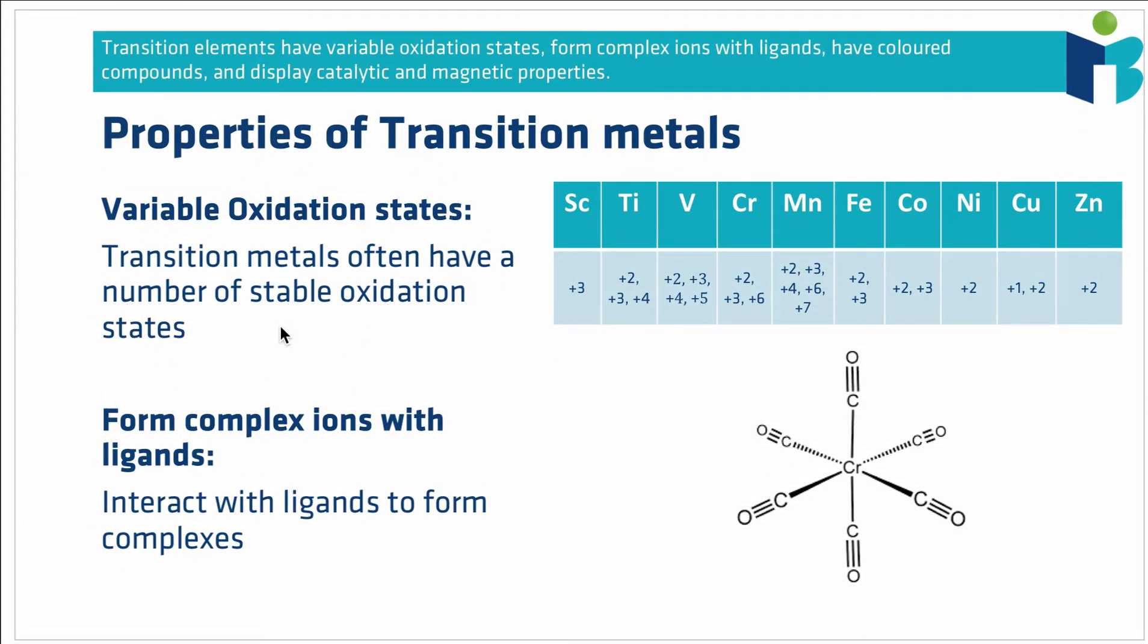The first property to point out is that transition metals often have variable oxidation states. What this means is they can form stable compounds in a number of different oxidation states. This isn't something that can normally be said for group 1 and 2 metals for example. Shown on the right here are your first row D block elements. I've included zinc even though this isn't technically a transition metal and you can see that some of the elements only have one stable oxidation state. Scandium is only really stable in the plus 3 state, zinc in the plus 2.